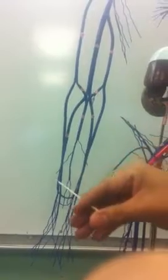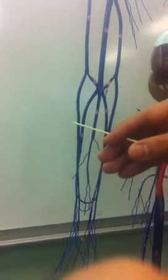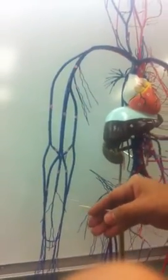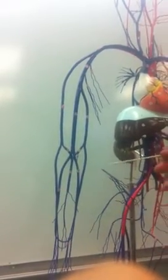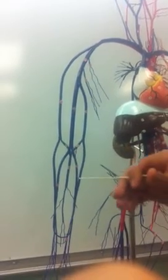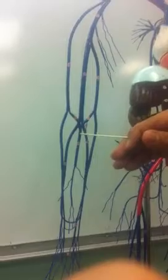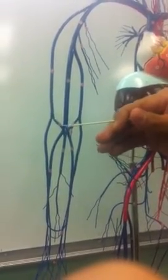There is also a deeper palmar arch, and that arch ascends and forms a superficial vein on either side. On the lateral side we call it the cephalic vein, which comes all the way up. On the medial side we call it the basilic vein. Two other important superficial veins are the median antebrachial vein and the median cubital vein.